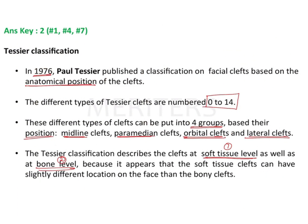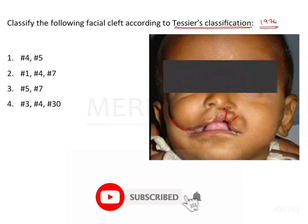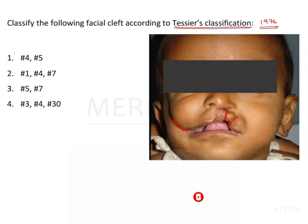With this basic knowledge of Tessier's classification, let's return to the clinical picture. The pediatric patient shows a cleft just adjacent to the midline, one more cleft lateral to this, and another prominent cleft extending from the right angle of the mouth — so the patient has three clefts. Since options 1 and 3 demonstrate only two types of cleft, we can omit them and focus on options 2 and 4.